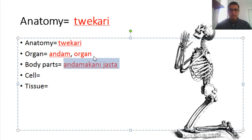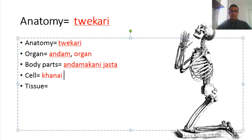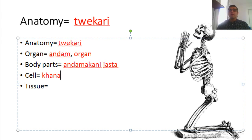Cell — there's a mistake here. Cell is khana. This word has a lot of meanings in Kurdish. In the biological context, khana means cell. Khanei mrov means human cell, khanei ajal means animal cell, and khanei ruak means plant cell.